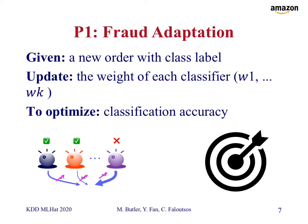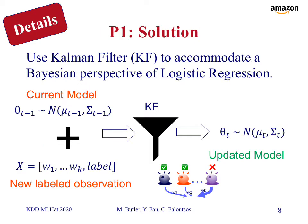For subproblem one, fraud adaptation: in a standard supervised learning context, we're given a new order with a class label indicating the outcome, and we want to update the weight of each classifier — our oracles — to maximize classification accuracy. Our solution is to use the Kalman filter as a means to blend the scores coming from those different oracles. Our current model is combined with a new labeled observation to arrive at an updated model using the standard extended Kalman filter equations.